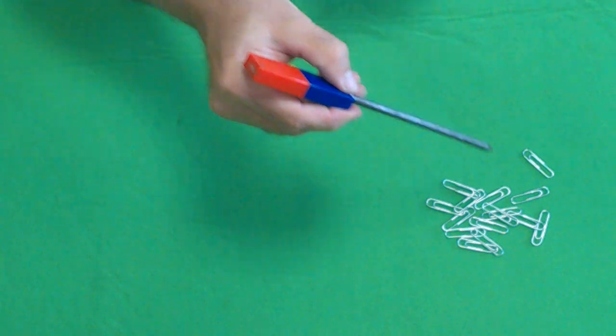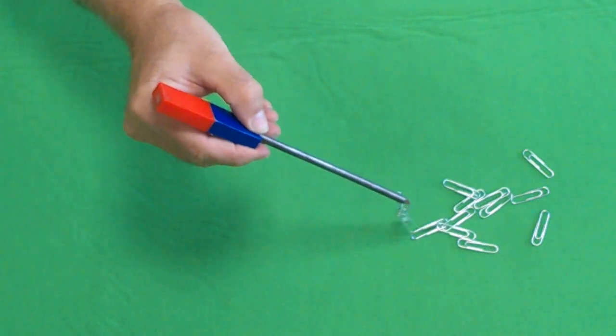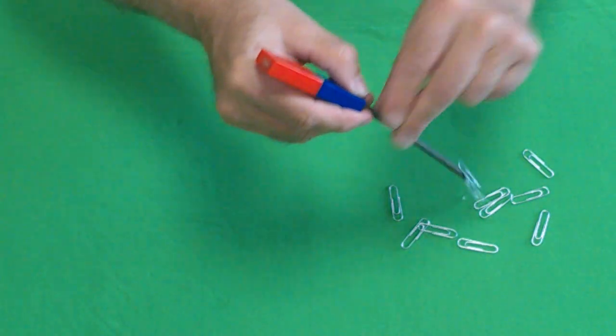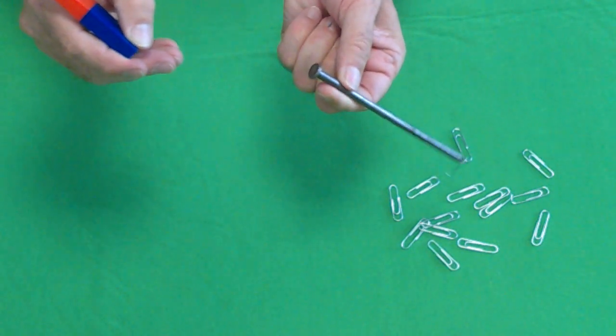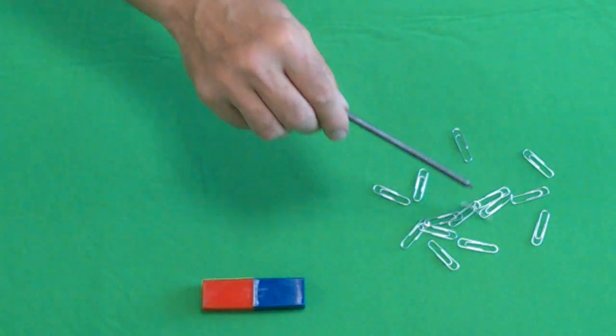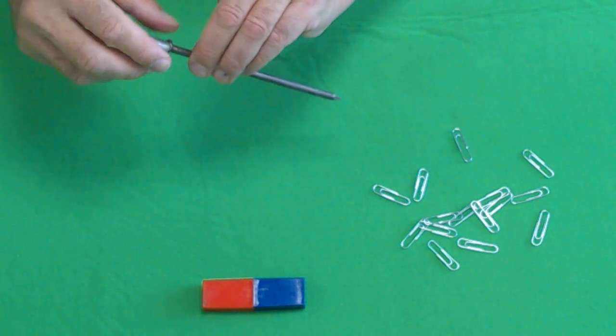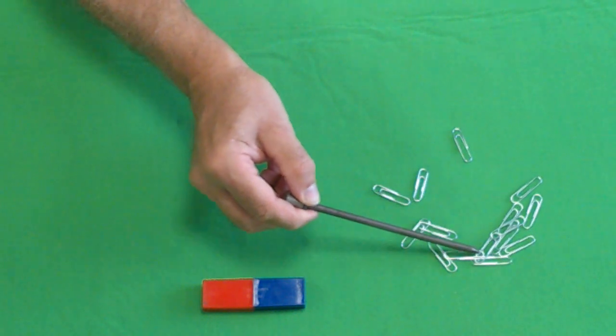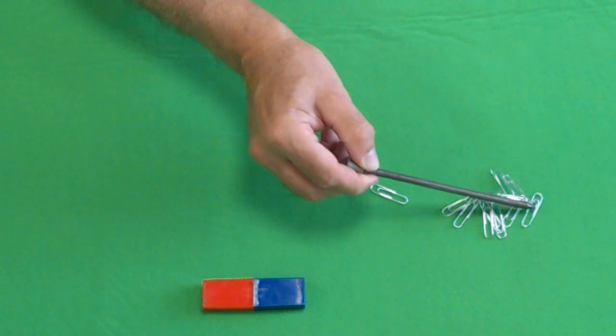Attaching the magnet to the nail means that the field lines can be concentrated through the magnetic nail, turning the nail into a temporary magnet. Remove the magnet and the nail itself is no longer magnetic. This is called induced magnetism. Using a stronger nickel or cobalt magnet perhaps makes this even clearer. Many more paper clips are picked up.